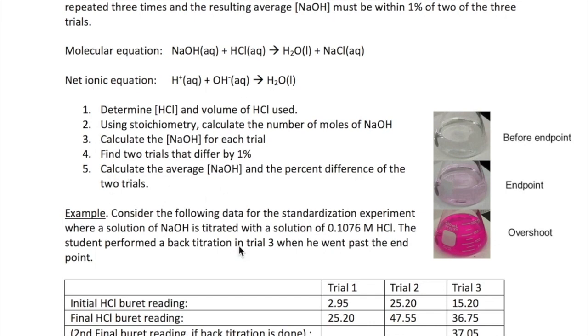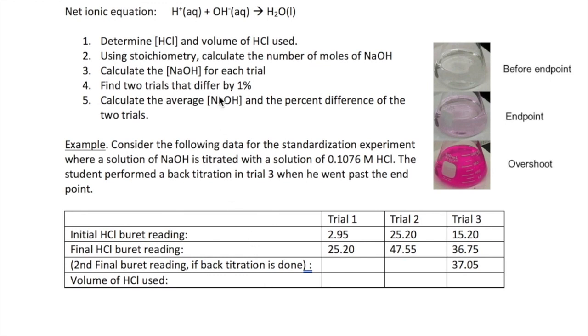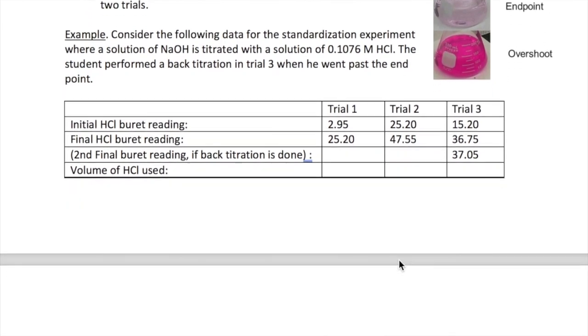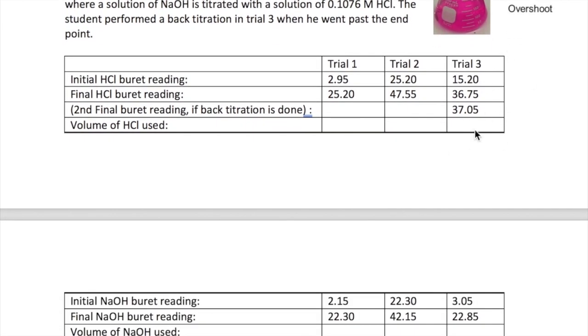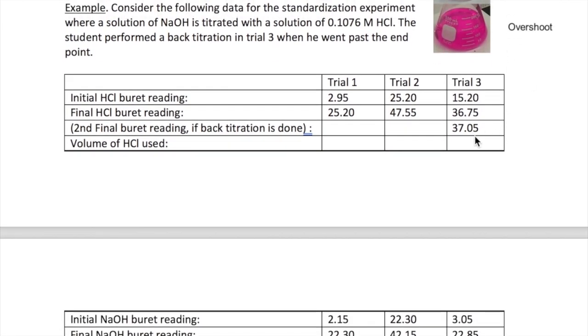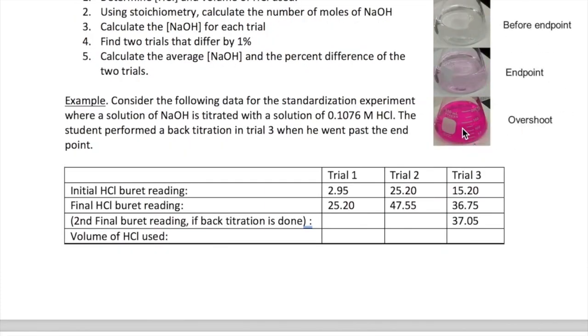Let's try it out with this sample data, which was collected when a standardization experiment was done using 0.1076 molar HCl. The student did the experiment three times and recorded the data. This is what you will do as well. Note that a back titration is done in trial three. What's a back titration? This is when you overshoot the endpoint of the titration, which is shown in the picture. That means you've added too much NaOH. You can go back to your endpoint by adding a small amount of HCl, which is what the student did here.